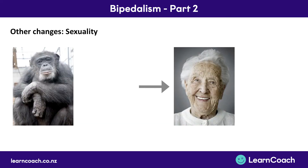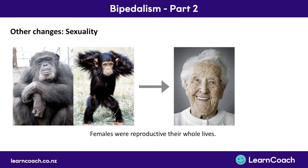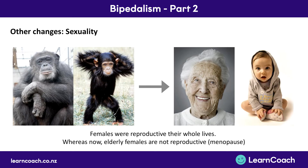Other changes were in sexuality. For primates, they're reproductive their whole lives — an elderly primate can have offspring. Whereas elderly females now can't have offspring; they're not reproductive. Women go through menopause and then can no longer have children after that.